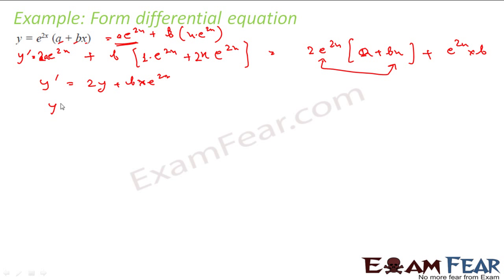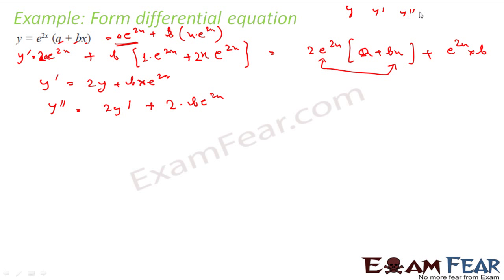Now differentiating y dash to get y double dash: that becomes 2·y dash plus 2·b·e^(2x). This is essentially my final differential equation form — the only thing left is to replace b using the earlier equations.